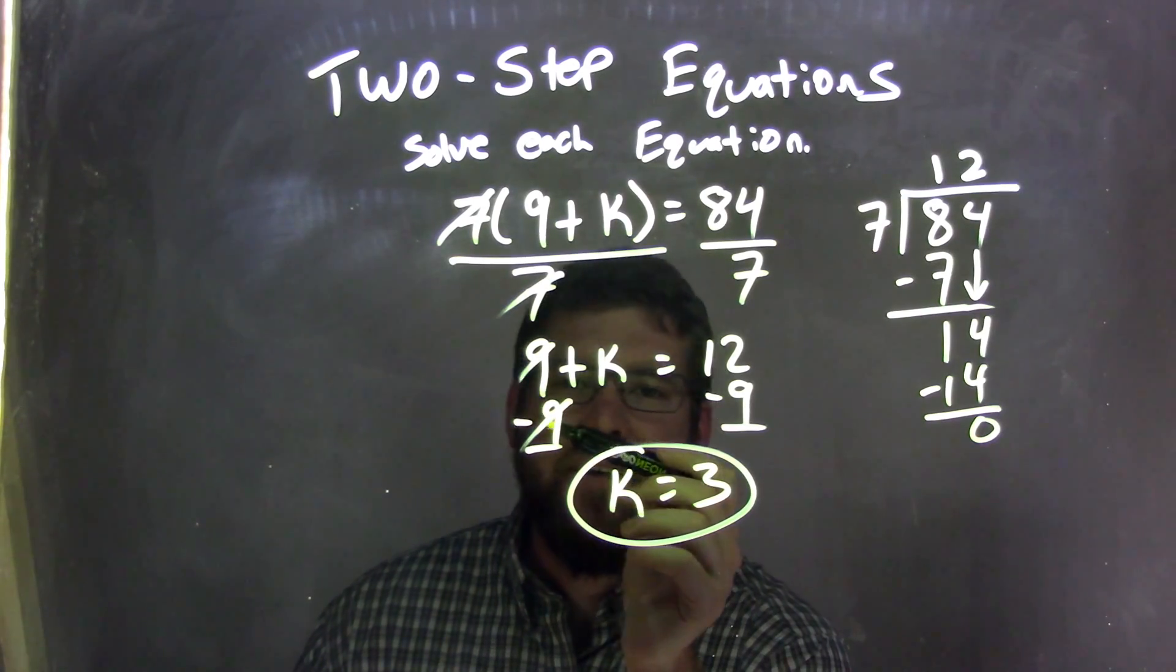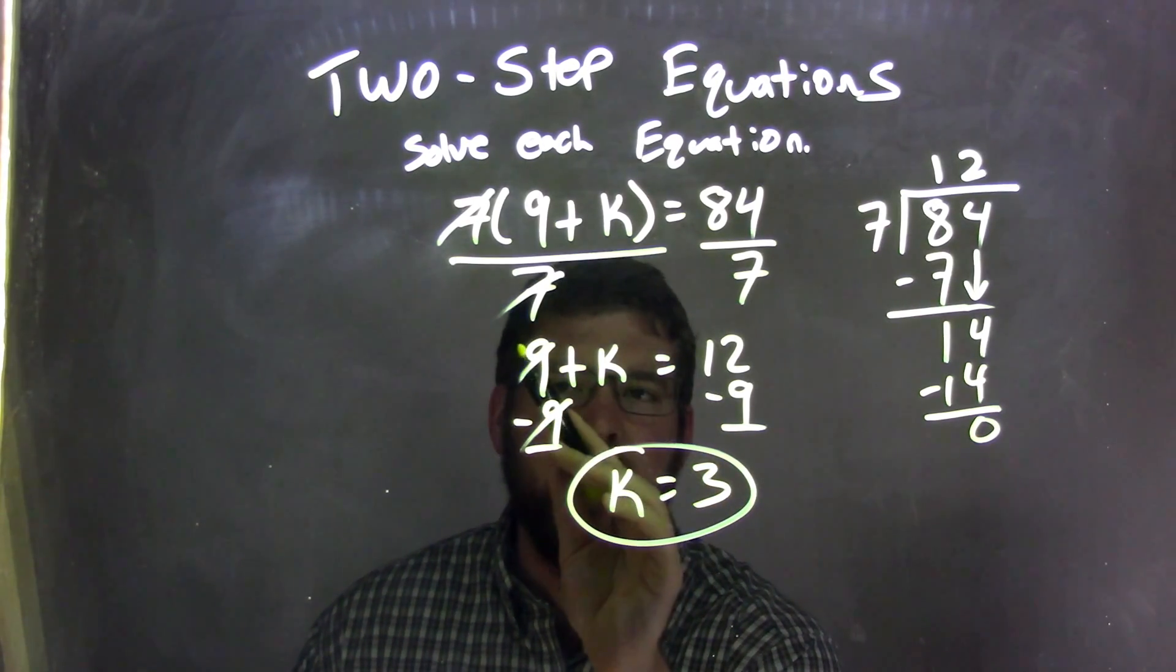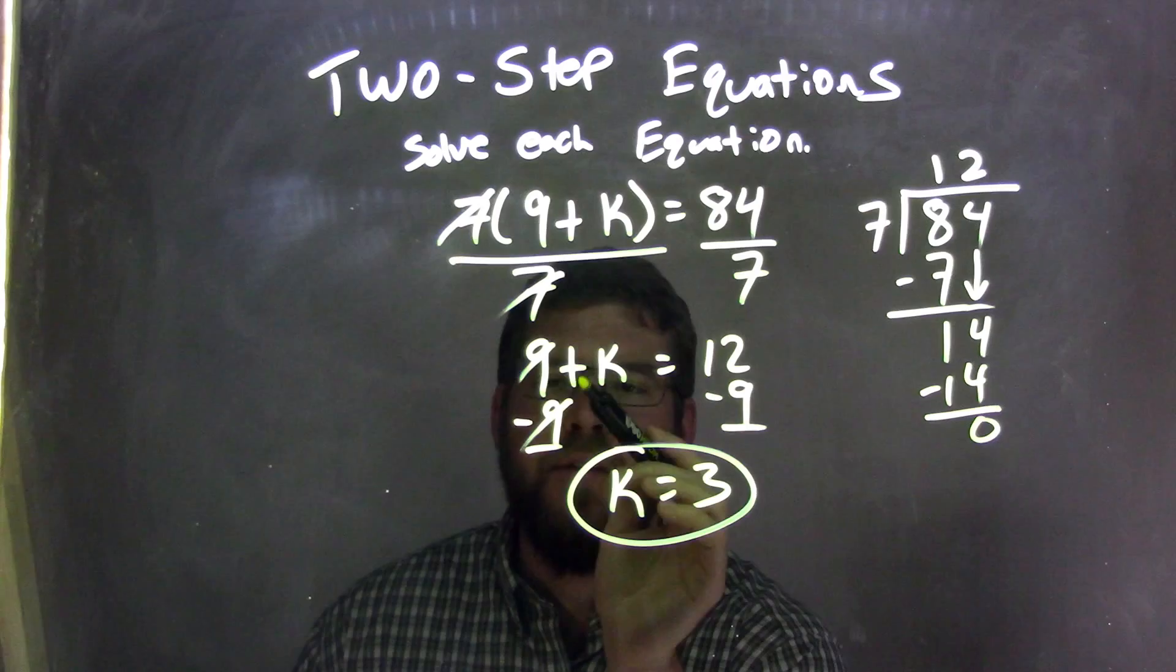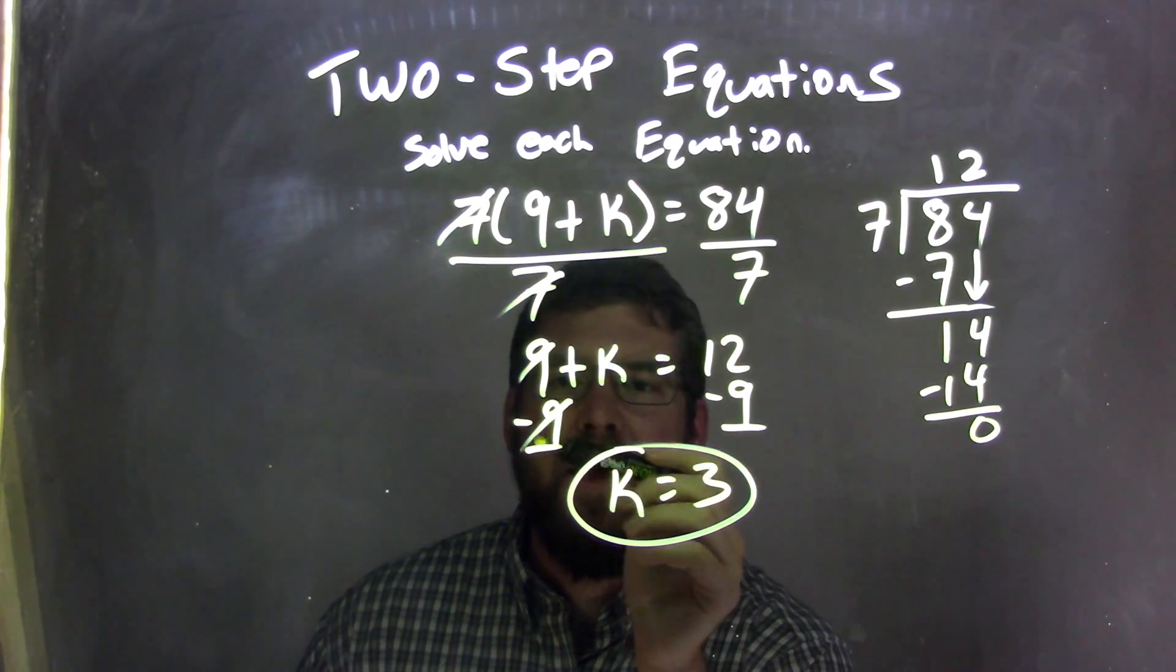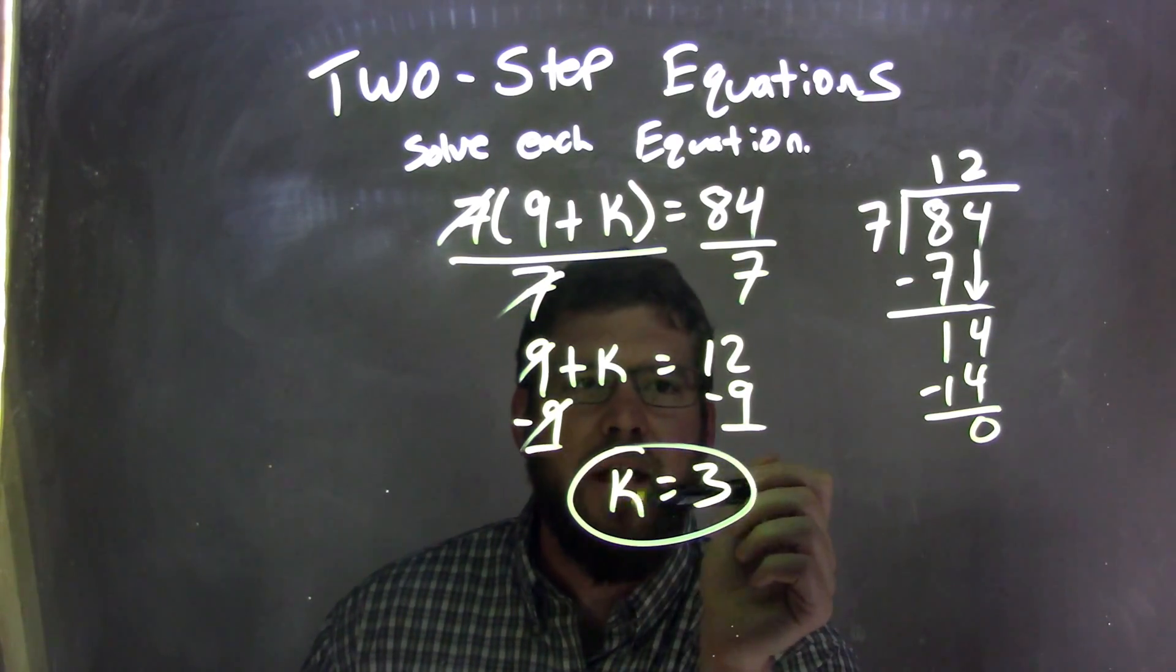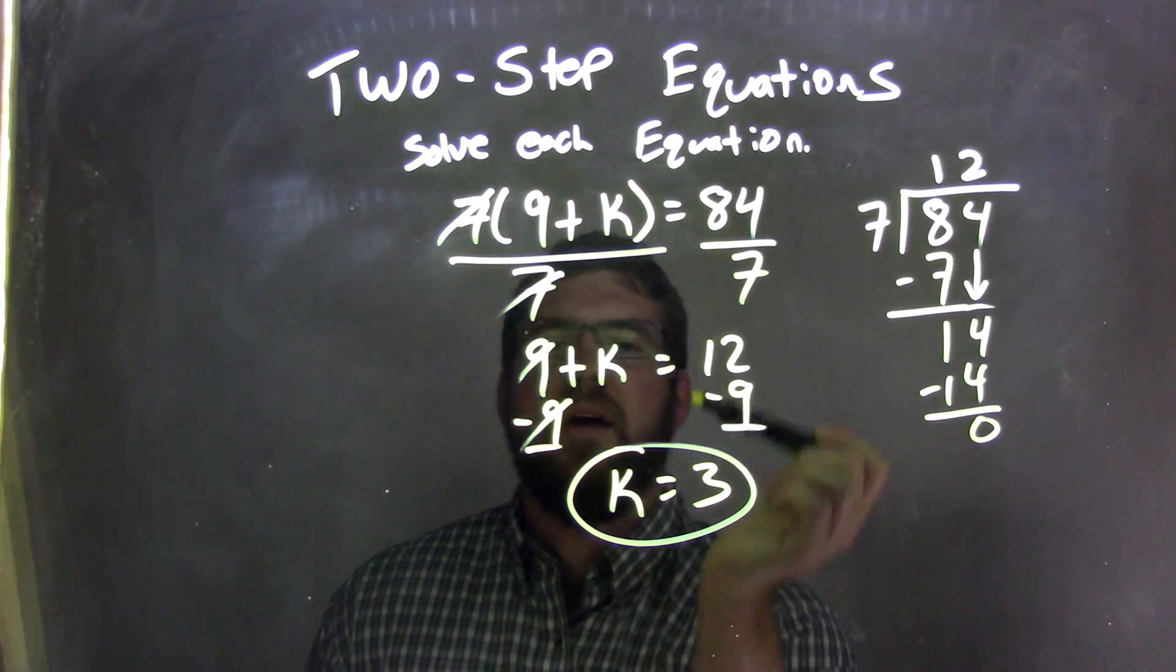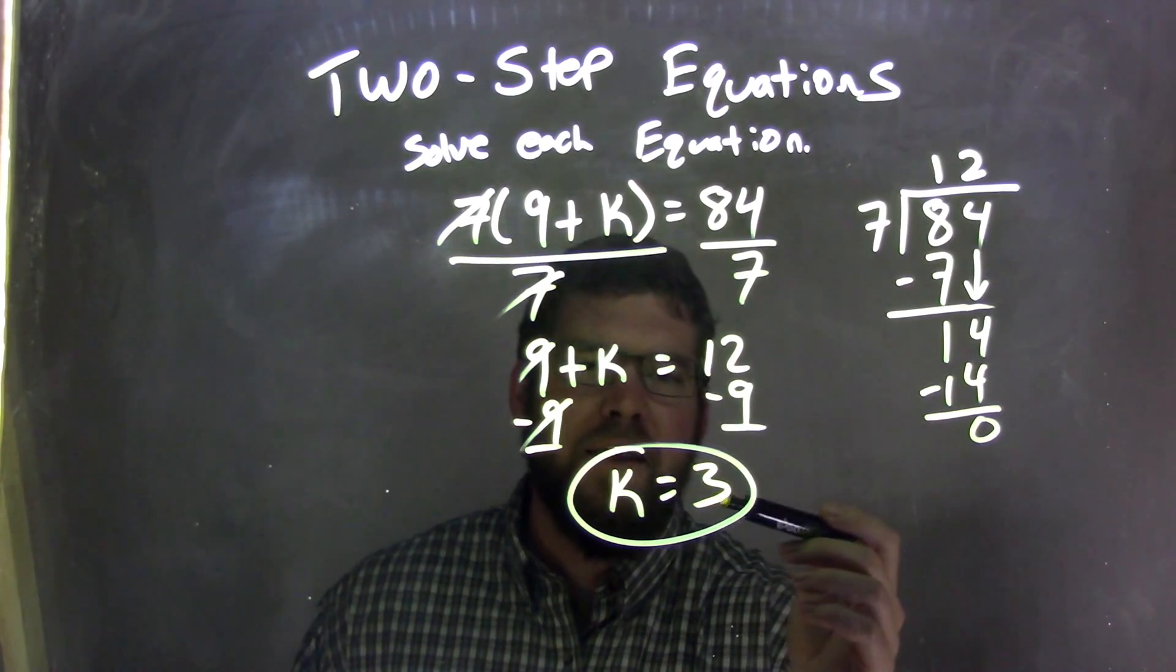I then have to get rid of that 9. Observe that addition is really going on there, positive 9. Subtract 9 from both sides. So the 9s cancel on the left, leave me with just k. And 12 minus 9 is 3. Giving me my final answer of k equals 3.